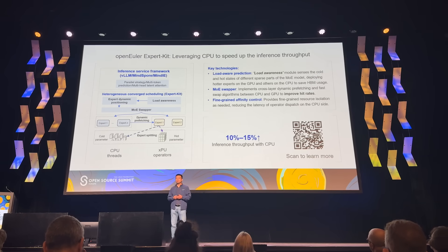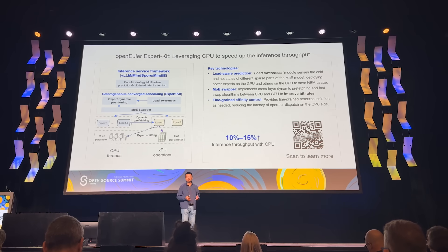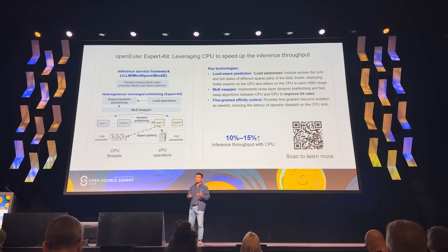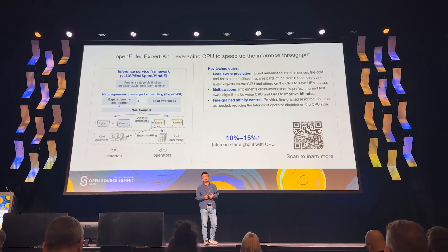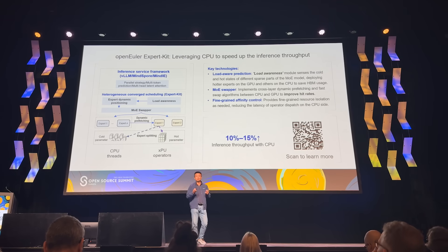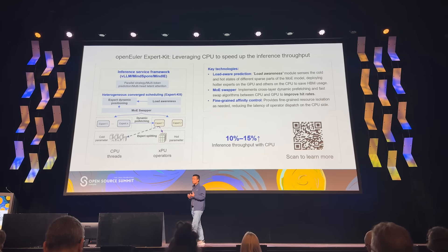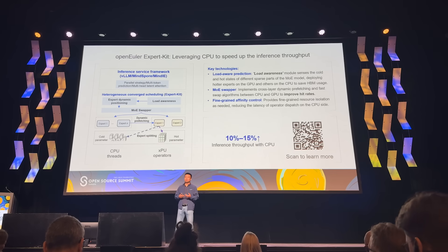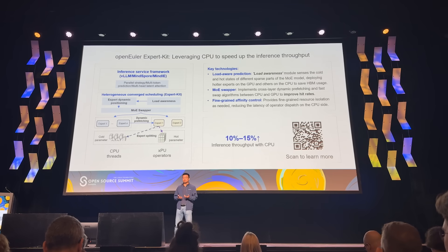Someone might ask: if you combine ExpertKit with Syshex, what happens — does it increase or decrease performance? Actually, I don't know. I asked the same question to our Technical Committee Chairman, and he also couldn't give me an exact answer, because they are very new projects and the two teams haven't yet considered how to collaborate. But I think that's okay, because AI is very new and the AI stack evolves very quickly. In the OpenEuler community, we encourage different teams and groups to bring up their projects individually, and eventually they can collaborate together.